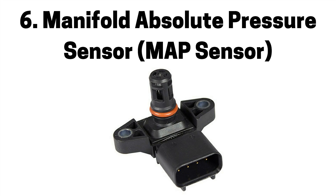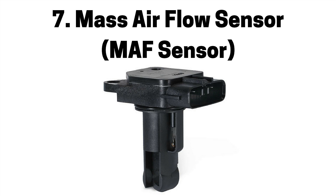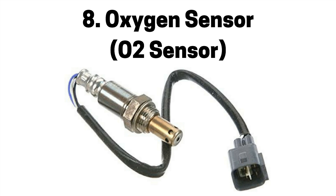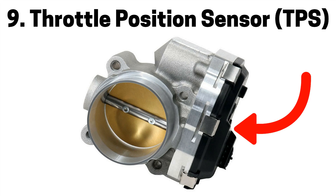Number six is a faulty manifold absolute pressure sensor, also referred to as a MAP sensor, which can cause a rich or lean air fuel mixture, engine misfire, and a check engine light. Number seven is a faulty mass airflow sensor, also referred to as a MAF sensor, which can cause a rich or lean air fuel mixture, engine misfire, and a check engine light. Number eight is a faulty oxygen sensor, also referred to as an O2 sensor, which can cause a rich or lean air fuel mixture, engine misfire, and a check engine light. Number nine is a faulty throttle position sensor, also referred to as a TPS, which can also be caused by accumulation of carbon, road grime, and other materials interfering with opening and closing the throttle plate, causing a rich or lean air fuel mixture, engine misfire, and a check engine light.